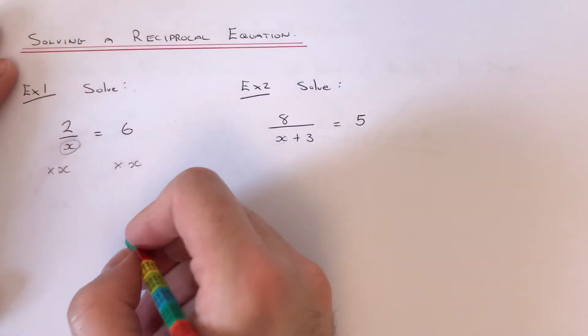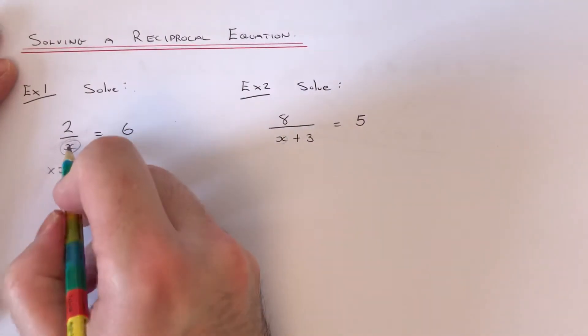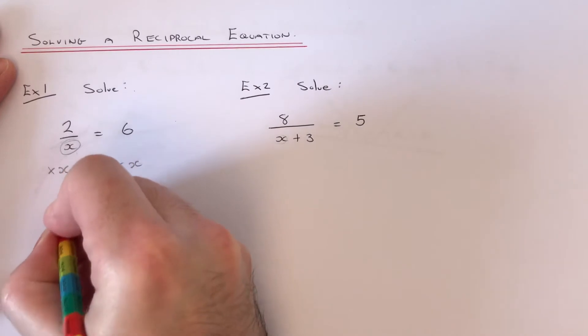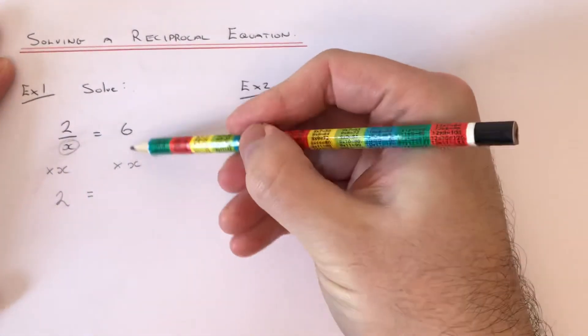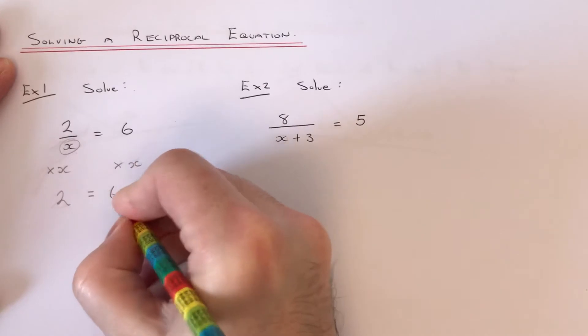So times both sides by x. This will cancel the x out on the left hand side and just leave us with 2. And 6 times x is 6x.